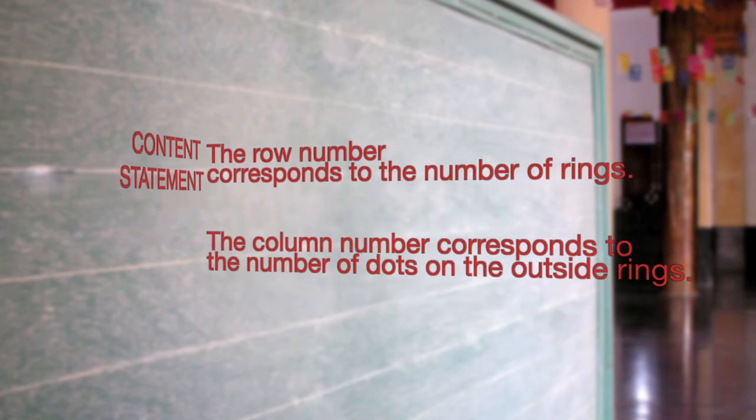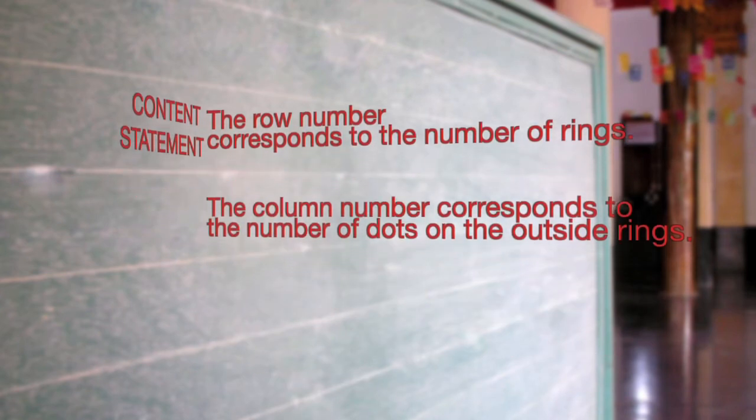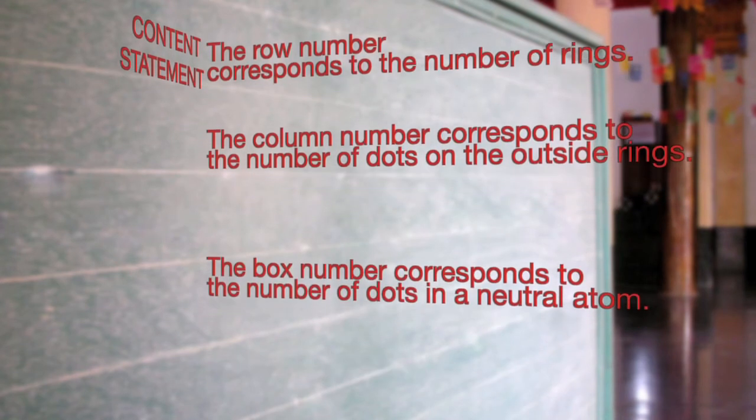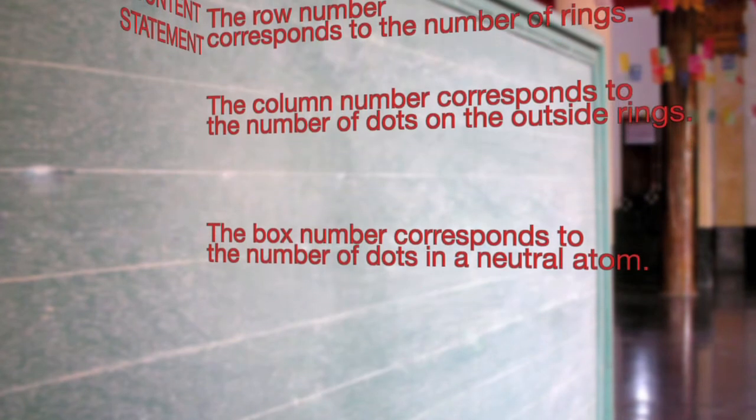The row number corresponds to the number of rings. The column number corresponds to the number of dots on the outside rings. And the box number corresponds to the number of dots.